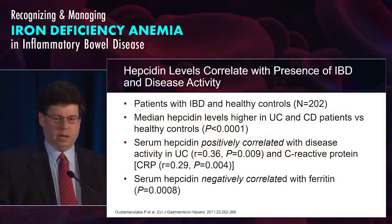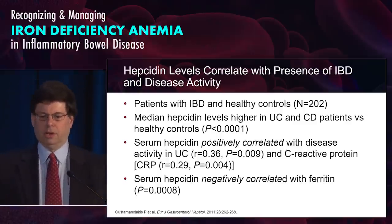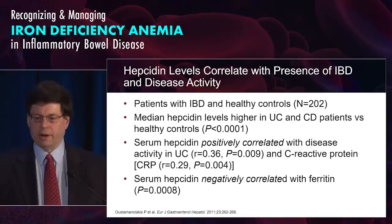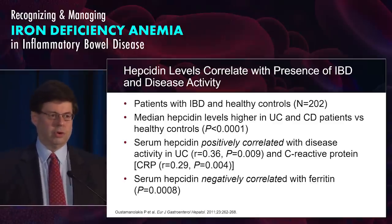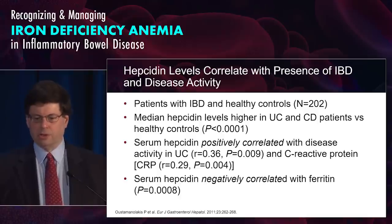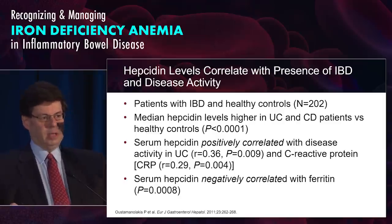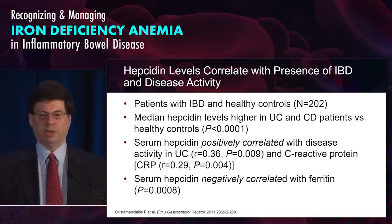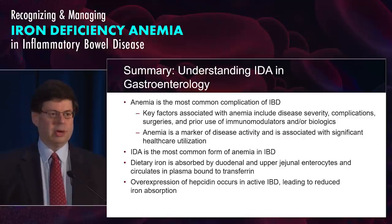Is hepcidin elevated in IBD? There are several studies. In one study, they looked at IBD patients versus healthy controls. Hepcidin levels were higher in ulcerative colitis and Crohn's than in the healthy population, and they correlated with disease activity and with CRP. The key thing to remember is that hepcidin negatively correlated with ferritin — so hepcidin goes up, it blocks the uptake of iron through the enterocyte, and you get less absorption and iron deficiency.